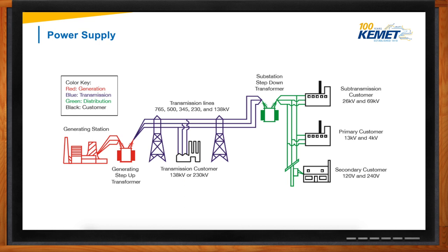After electricity is generated, the voltage is stepped down at a substation, allowing the electricity to be transported over long distances. AC current, or alternating current, is better than direct current for transmission because it minimizes power loss — you're trying to lose as little power as possible in your transmission lines. The stepped-up electricity is then transported to different destinations with the help of transmission lines, which can be either overhead or underground. Once it reaches the destination, another substation steps down the voltage to a level suitable for distribution lines. This is where we need our power supply.